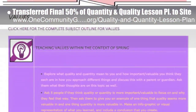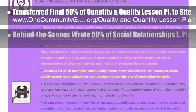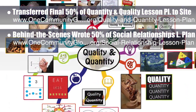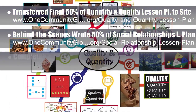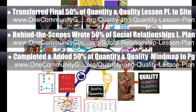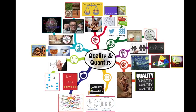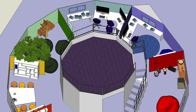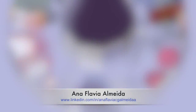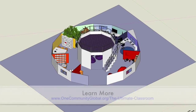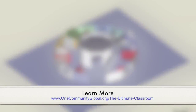In addition, we wrote the first 50% of the social relationships lesson plan behind the scenes. We also completed and added the first 50% of the mind map for the quantity and quality lesson plan to the webpage. Here's that mind map. Ana from the architecture and planning intern team added interior layout details and furniture specifics to the 3D design of the ultimate classroom, as you can see here.